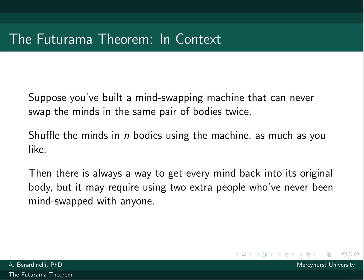There's a mind-swapping machine, and it can never swap minds in the same pair of bodies twice. The physical brain is explained as being the problem in the episode. So imagine we've shuffled up the minds in a certain number of bodies using the machine, according to this rule.